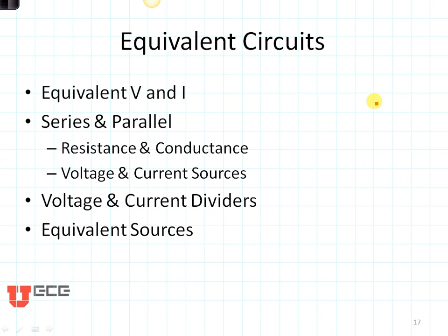So in short, we've talked about equivalent circuits. Basically, an equivalent circuit is if we have the same voltage and current at the front end, we know that two circuits are equivalent. We talked about series and parallel. Remember that resistances in series add, and conductances in parallel add. Voltages can be added in series, and current sources can be added in parallel, but not the other way around. We also talked about voltage and current dividers. Remember that those can also be used as summers, and then we talked about equivalent sources.